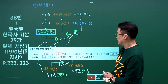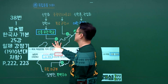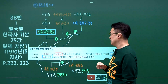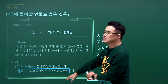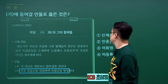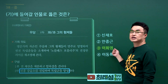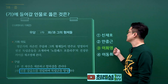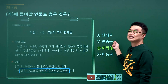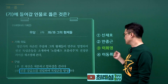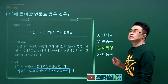신흥무관학교 문제입니다. 만주 쪽에서 신흥무관학교를 세우는 활약을 했던 인물들의 내용입니다. 신흥강습소가 신흥무관학교의 전신인데 이 활동을 이끌었던 인물이 이회영입니다. 신채호는 의열단의 조선혁명선언과 관련 있고, 안중근은 이토 히로부미를 처단했으며, 이동휘는 대한민국 임시정부에서 활동했습니다. 정답은 3번입니다.